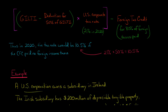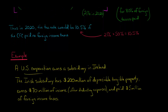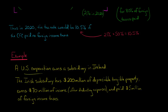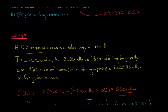Let's go through an example. We've got a U.S. corporation with a subsidiary in Ireland. This Irish subsidiary has $200 million of depreciable tangible property, which will help us calculate the GILTI. They earn $70 million of income in total after deducting all relevant expenses, and in terms of foreign income taxes, they end up paying $5 million.